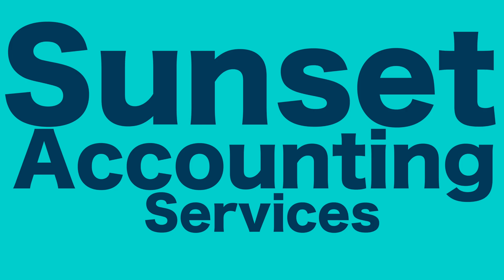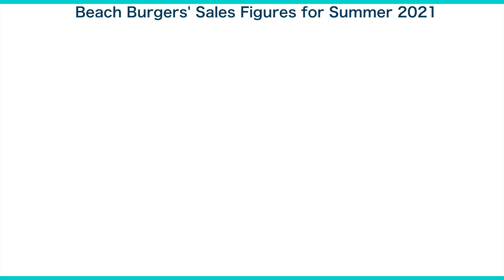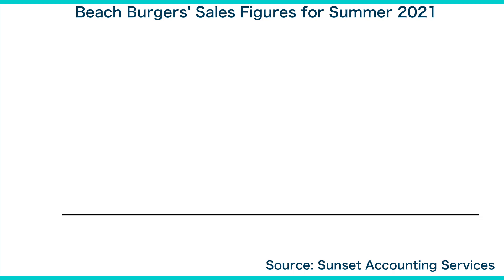To help calculate the sales figures, you ask Sunset Accounting Services to provide the numbers for June, July, and August. At the bottom of the chart, you should write Sunset Accounting Services as the source of the data. Then on the x-axis of the chart, you will write June, July, and August.